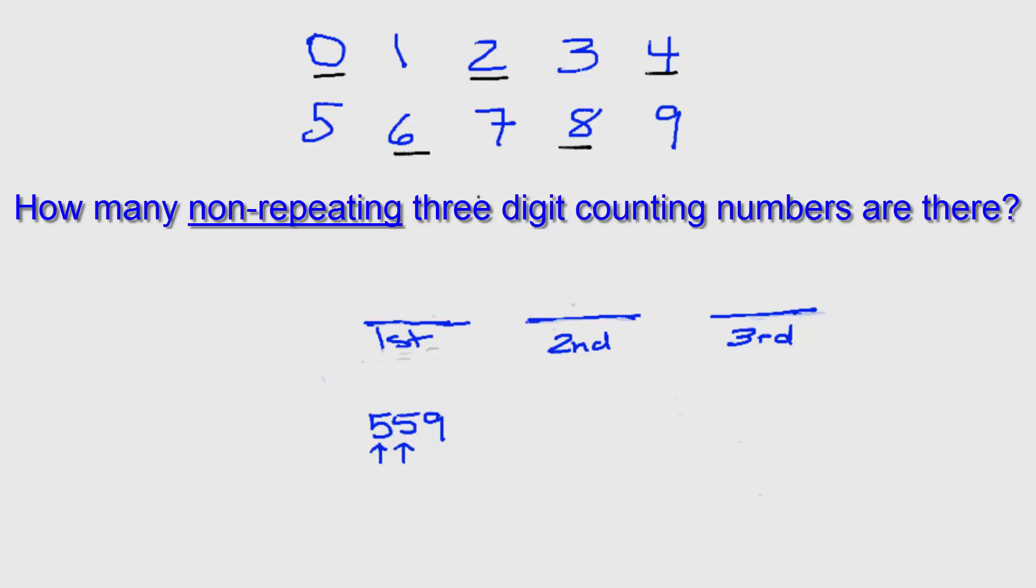We're still not going to allow 0 for our first digit, so we still have the digits 1, 2, 3, 4, 5, 6, 7, 8, or 9. One digit is missing from this list of 10 digits. So we have only 9 choices. We're not allowed to use whichever digit was used for the first.